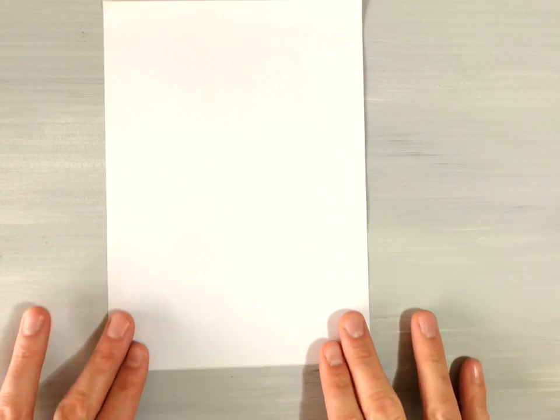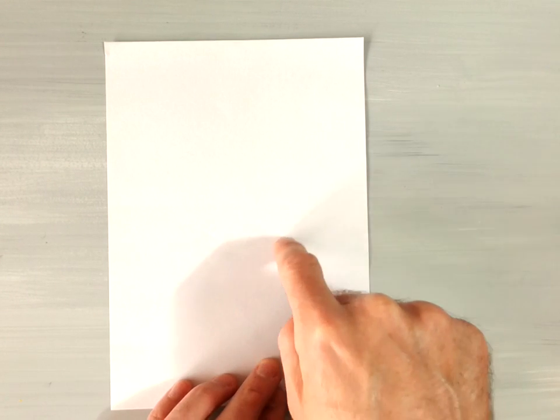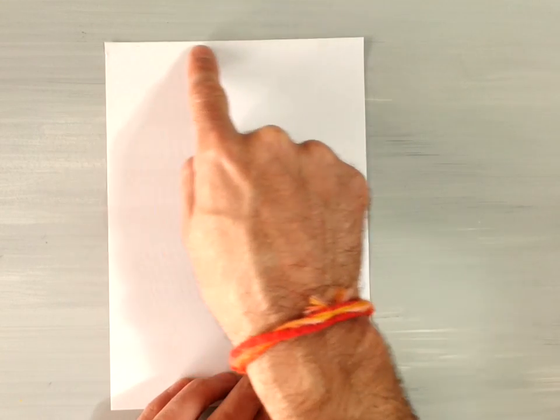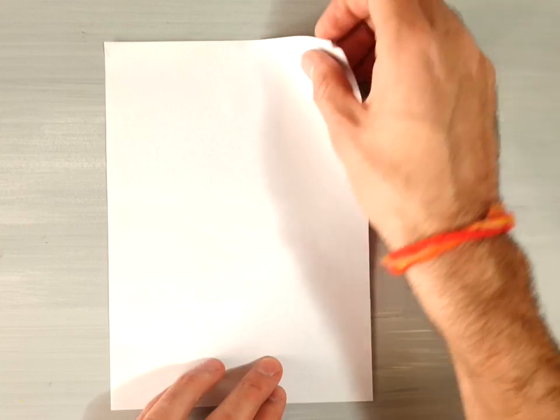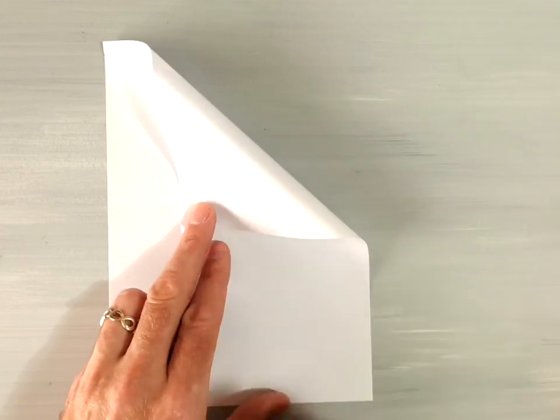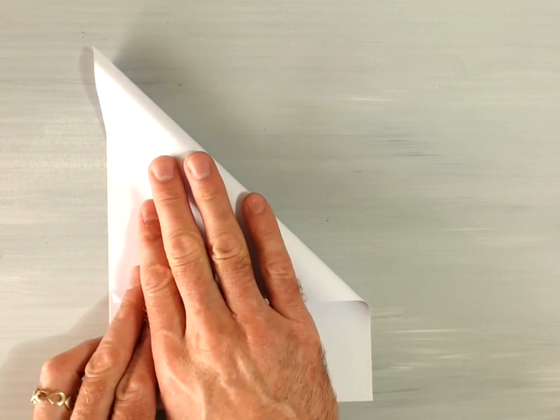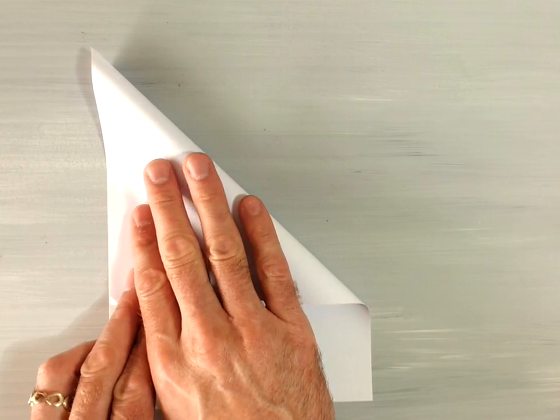If you want to make a larger model, you can obviously use any size. And the first step is to create an origami square. You'll need to take this top edge and fold it down to meet the side edge until the edges are parallel. By doing this, you're going to create a right triangle.